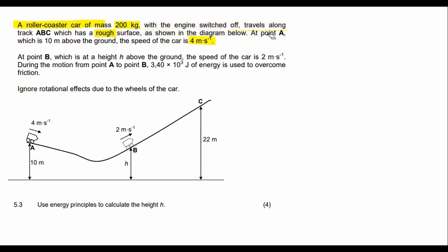Let's just make sure I've taken everything away. So at point B, which is at a height h above the ground, the speed of the car is 2 meters per second. During the motion from A to B, 3.40 times 10³ joules of energy is used to overcome friction. That's important.